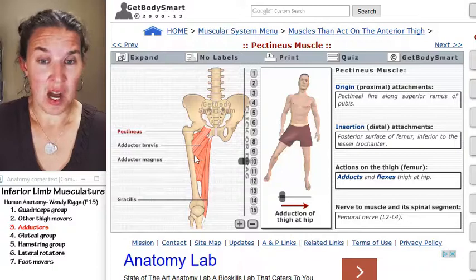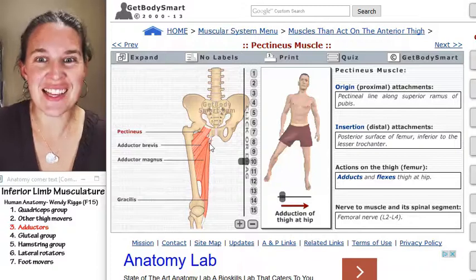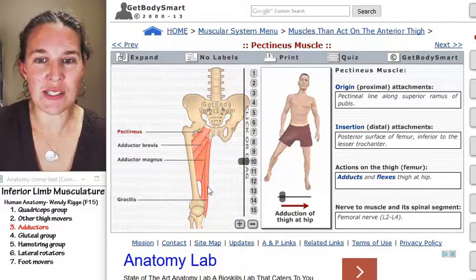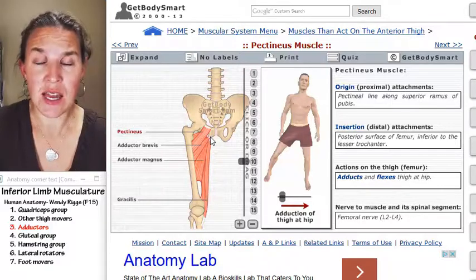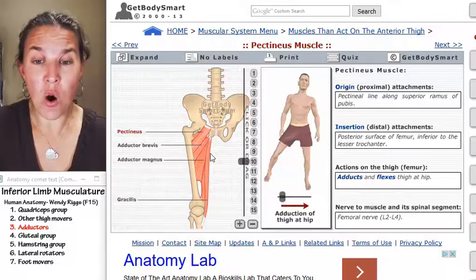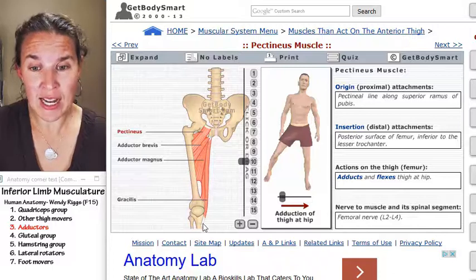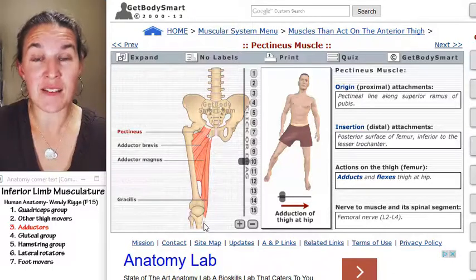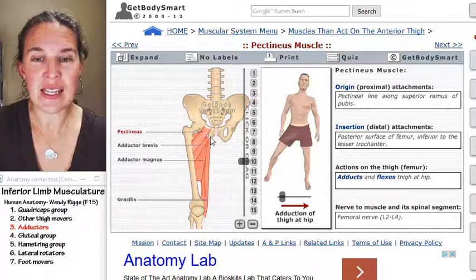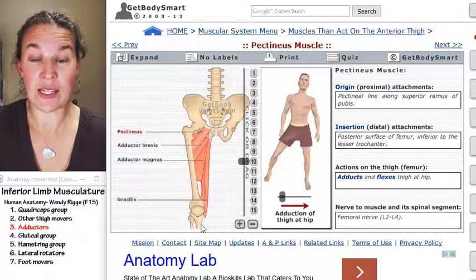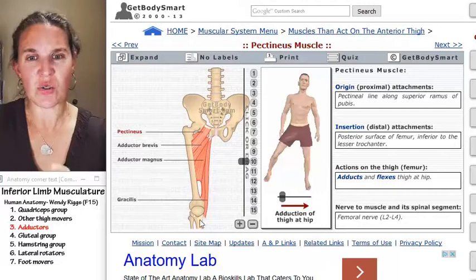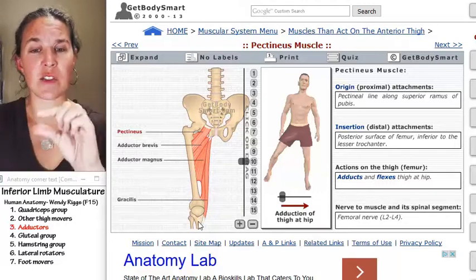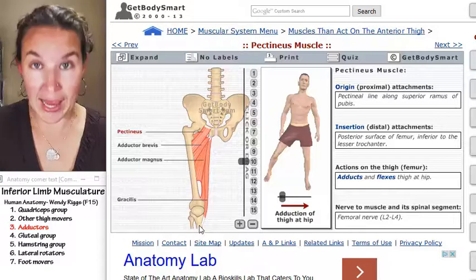You can see that this is the amazing gracilis. Gracilis is a long, straight muscle. It goes from the pubis all the way down and attaches to the medial side of the tibia. That's totally going to give you adduction just like the others, but since it crosses this joint, it's also going to give you some flexion of the leg.